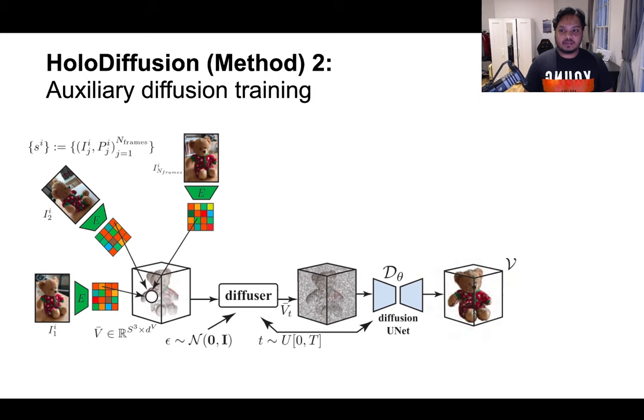The denoising unit D-theta takes the V-bar T and the time step T as input to predict the original clean version of the feature voxel grid V. Note that this constitutes the X-start formulation of the denoising diffusion probabilistic models, i.e. the DDPM algorithm.